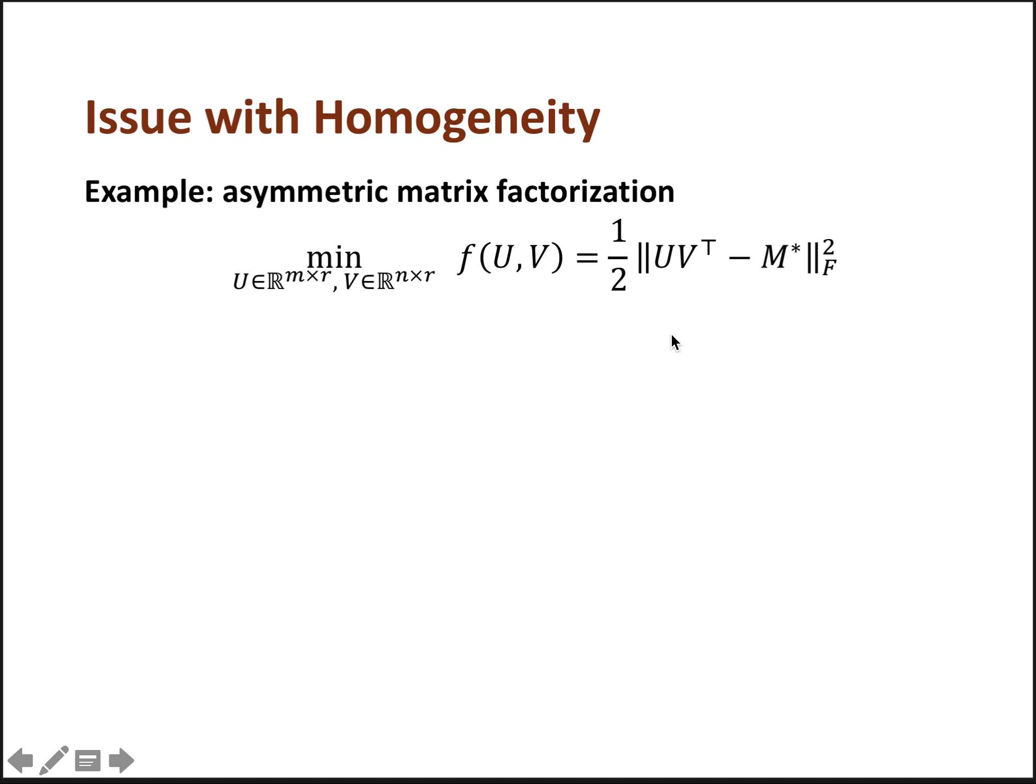And U and V are the variables in this objective function. And specifically, we want to study gradient-based methods to minimize this function. So this problem is a very simple deep learning problem with two layers and linear activation. And it also has the property of homogeneity that I described at the beginning.